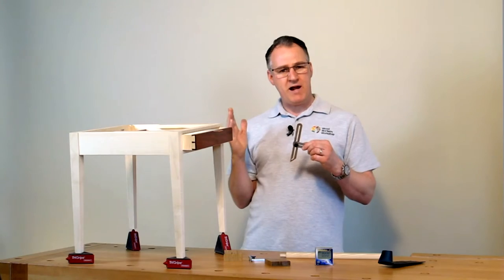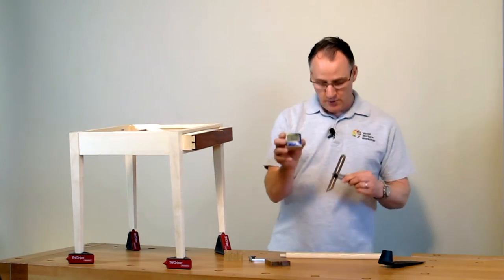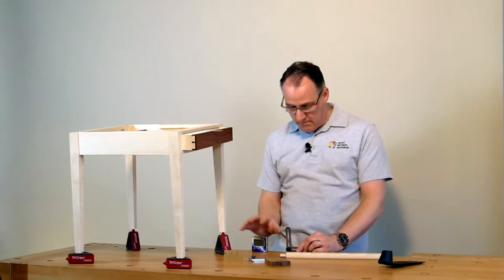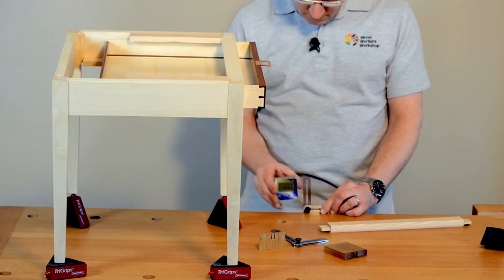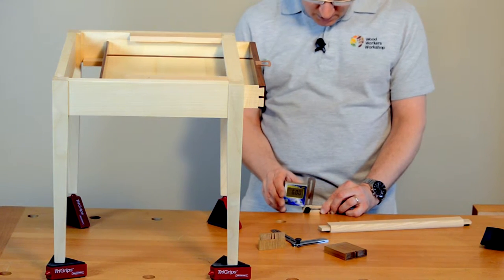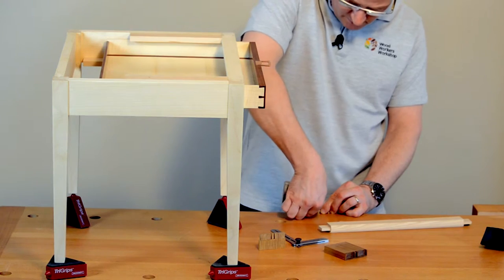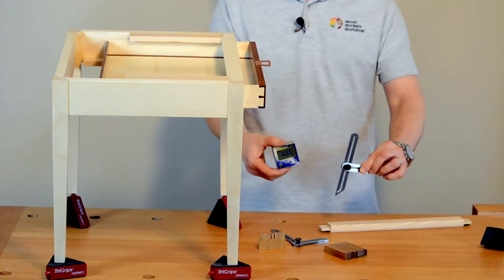If we have a particular angle we're working to, what we can do is use an angle cube, take a measurement off our drawing, pop it on here with the magnets, lock it over the size we want and tighten it down to transfer our measurements.